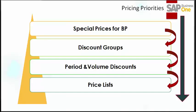Now, how are pricing priorities defined in SAP Business One? First, the system checks for special prices for the business partner, then discount groups, then period and volume discounts, then the price list. Since you can define several prices in the system for the same item, the system uses this priority logic to find the most specific valid price, starting with the most specific, and once found, enters it into the resulting document.